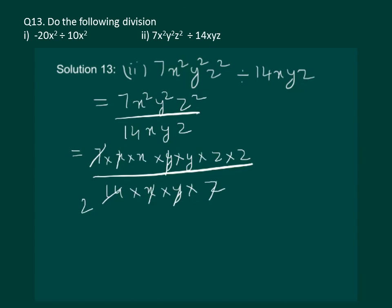x cancelled and one z gets cancelled and we are left with 1 by 2 xyz.